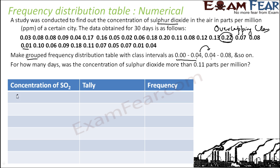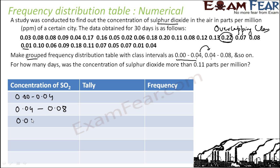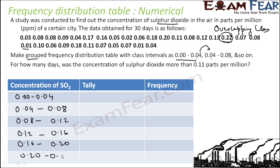Let's create the table starting with 0.00 to 0.04 as per requirement. The next will be 0.04 to 0.08, then 0.08 to 0.12, 0.12 to 0.16, 0.16 to 0.20, and 0.20 to 0.24. Those will be the classes.